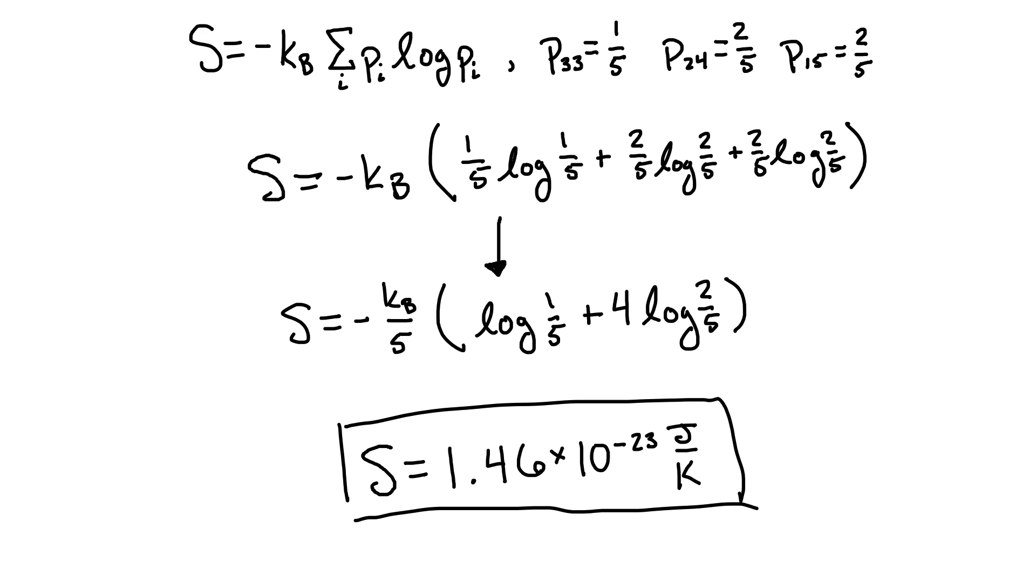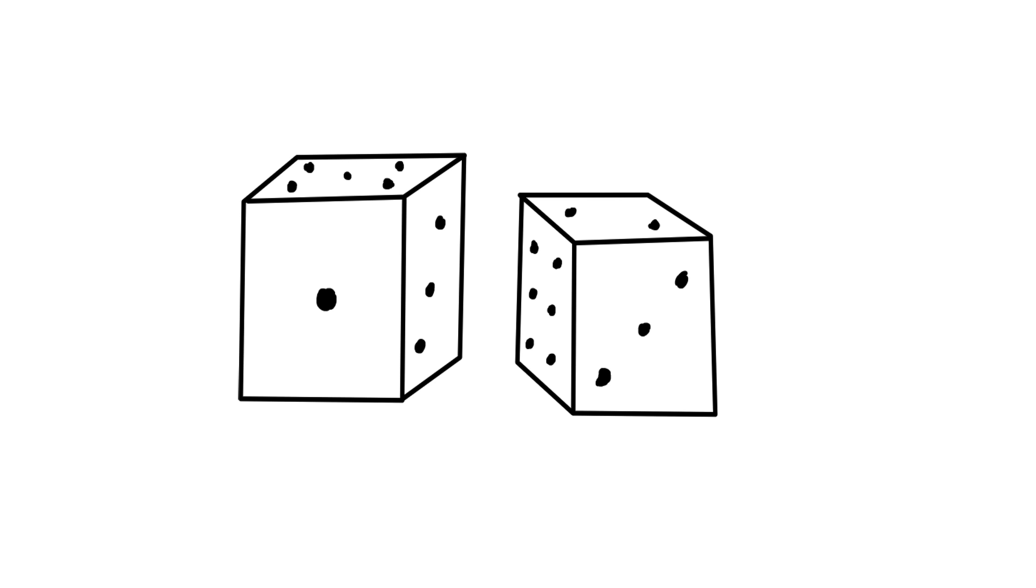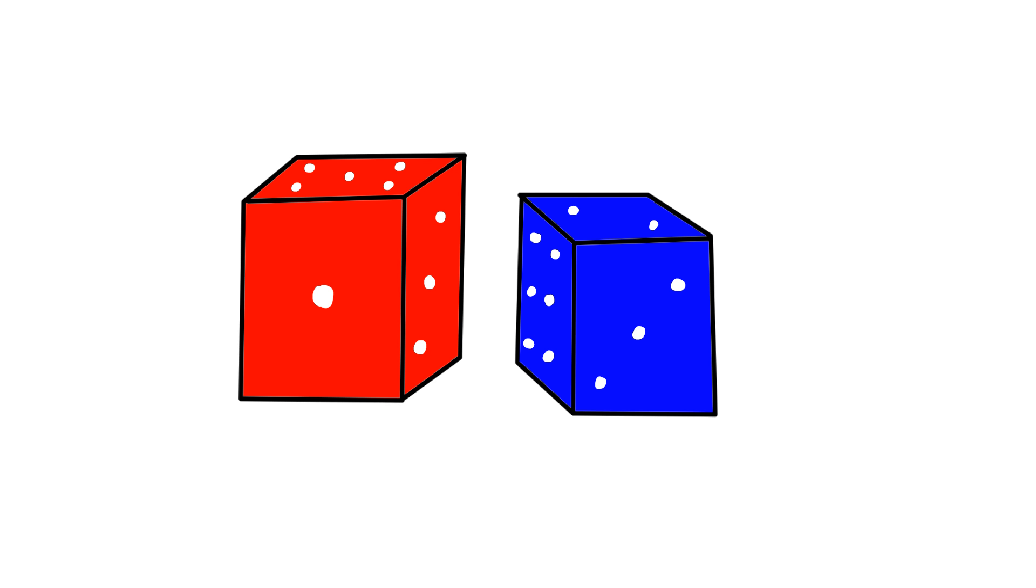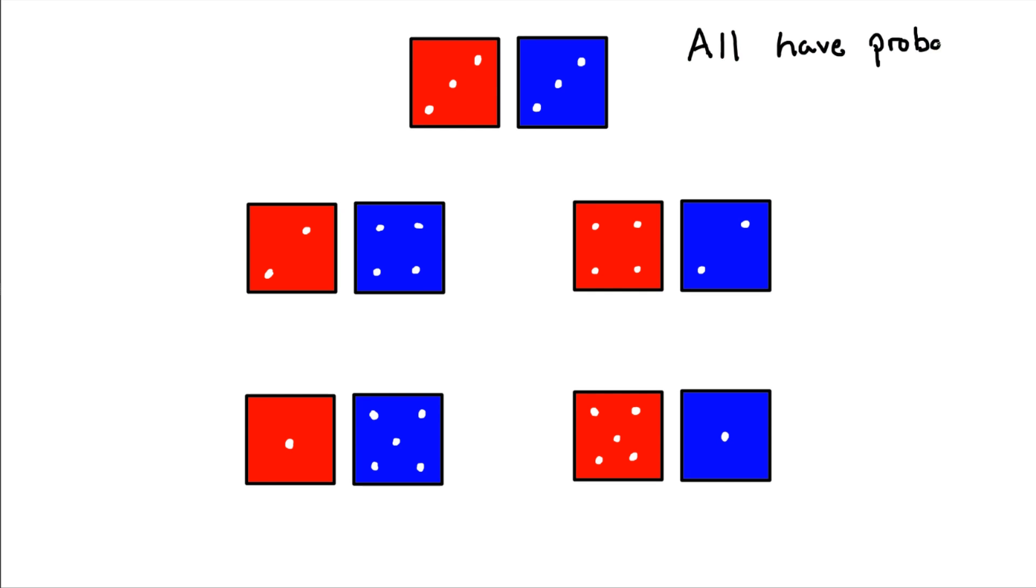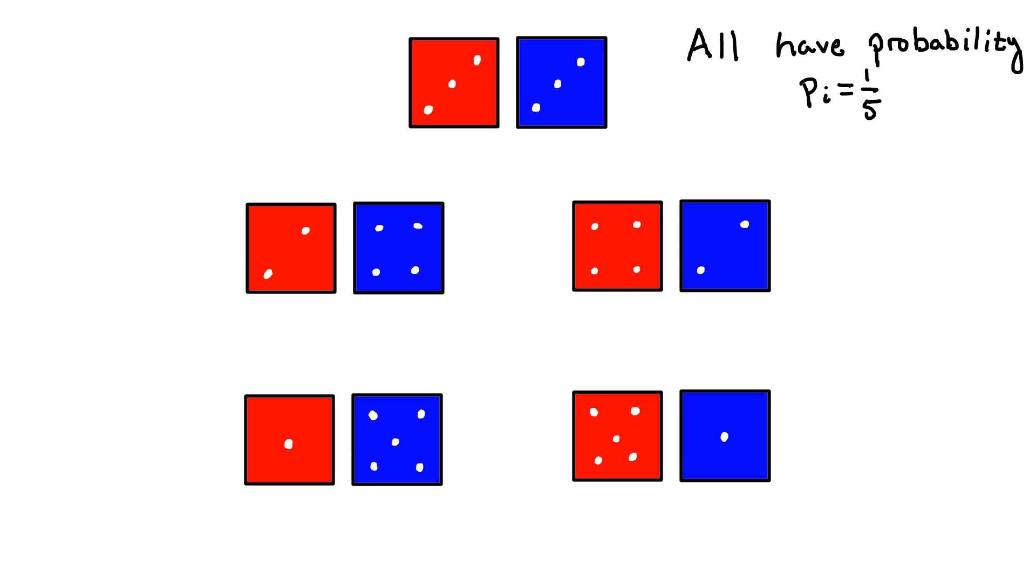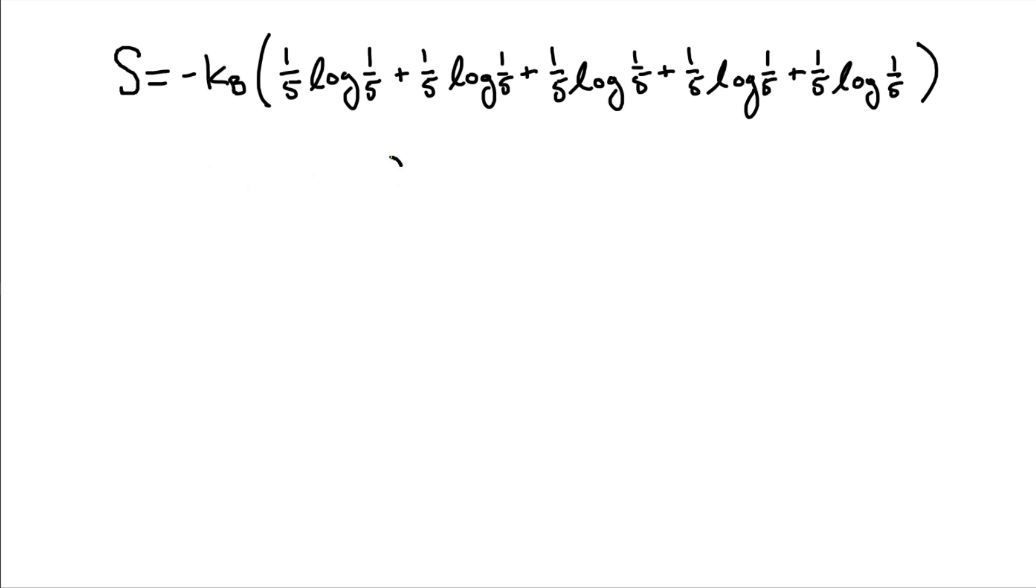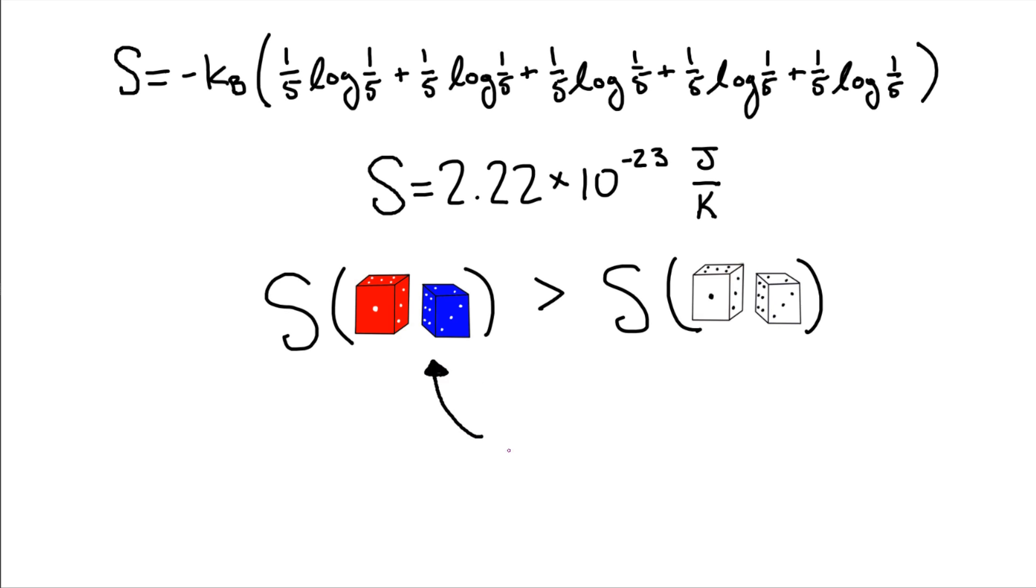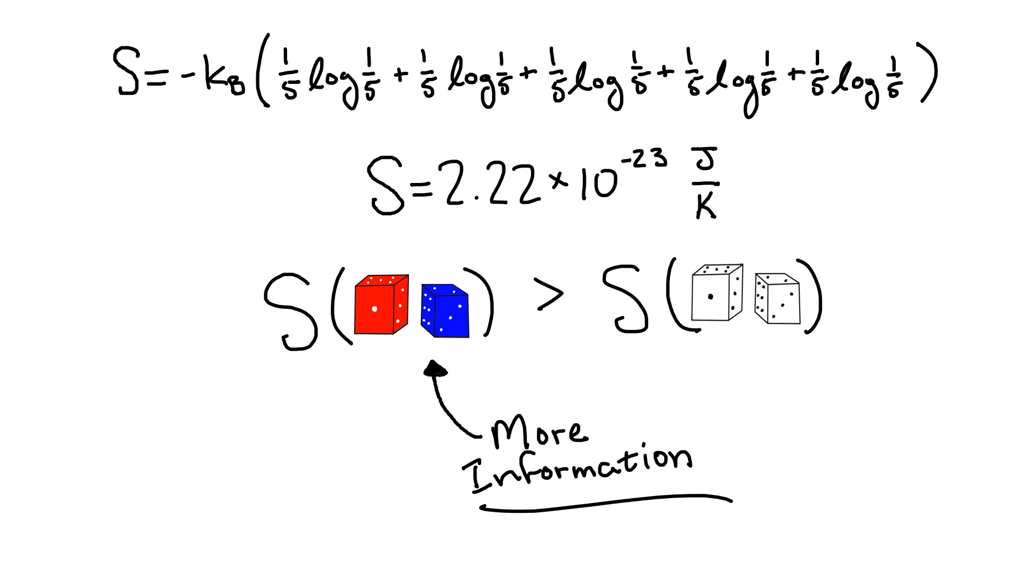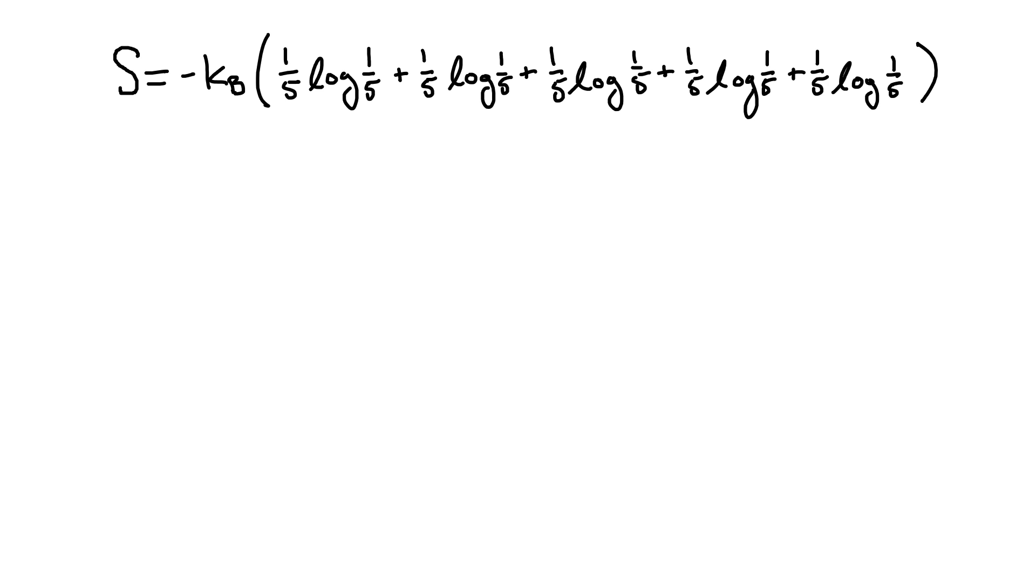Okay, so now what if we are able to distinguish between the two dice? Say one is red and one is blue. Well now all five states are considered separate outcomes, with only one way of rolling each. So they all have an equal probability of 1 fifth to be rolled. When we plug this into our formula to find the entropy, a few interesting things happen. The first is that we get a larger entropy than the first case. This shouldn't surprise us though, since the color of each die is now more information that we're choosing to neglect by just describing the state by its sum. The second interesting thing is that our formula simplifies very nicely when all of the probabilities are the same.